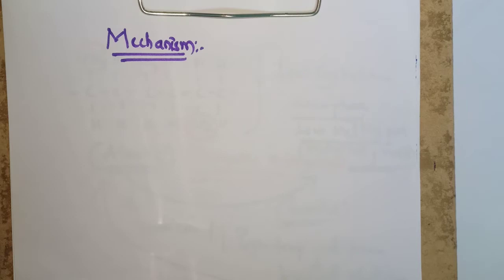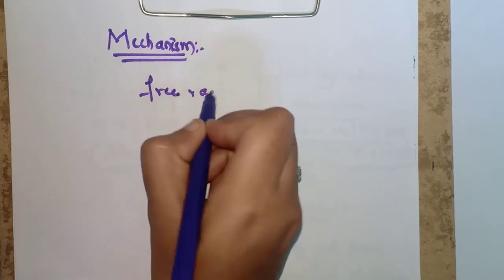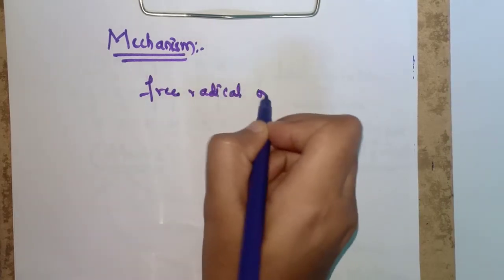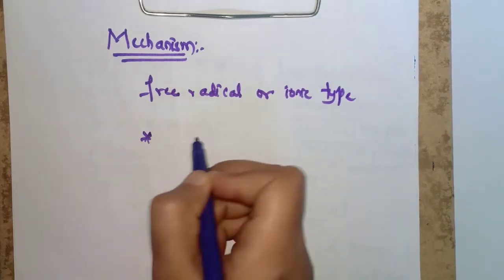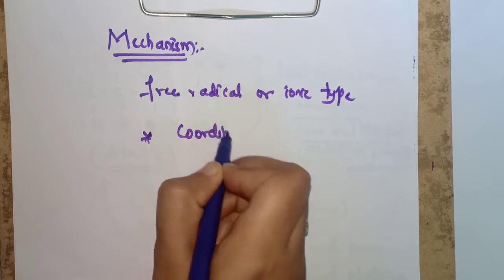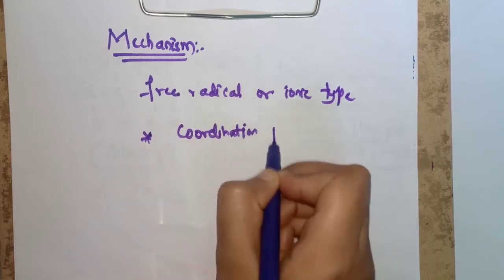The mechanism of Ziegler-Natta polymerization is an important topic. Not much is clearly known about the mechanism; several mechanisms have been suggested but none are well sustained. Polymerization by this Ziegler catalyst is neither free radical nor ionic type — it is coordination polymerization.